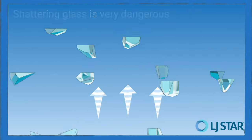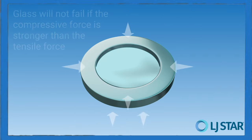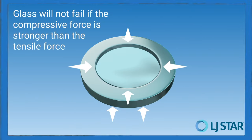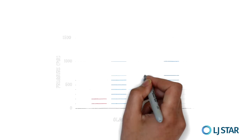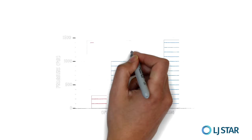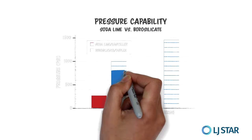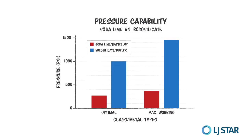Why does compressive strength matter? Glass breaks under tension or when it flexes, but it won't shatter or fail if the compressive force is stronger than the tensile force. To ensure you have the most compressive force possible, it goes back to what glass material you're using. Simply put, the best engineering performance you can find is borosilicate glass — it contracts less than soda lime, so you preserve the maximum compressive strength.